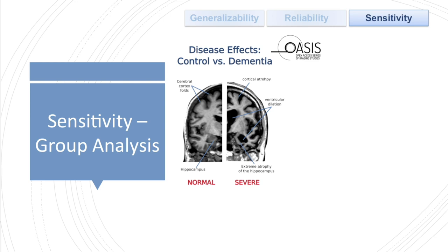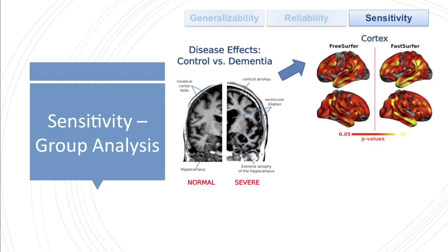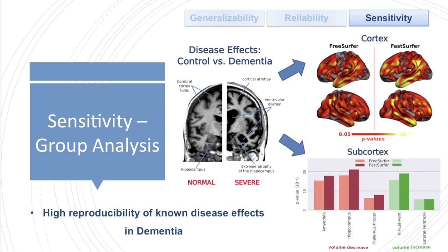Finally, we use the cross-sectional part of OASIS to determine how well FastSurfer reproduces known disease effects in a group study between controls and dementia patients, such as cortical atrophy, ventricular dilation, or atrophy of subcortical structures like the hippocampus. With FastSurfer we are indeed able to find reduced cortical thickness in regions associated with dementia, indicated by the p-value with high sensitivity — for example in the temporal lobe — and with increased sensitivity relative to FreeSurfer.